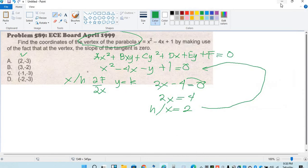Negative 3. Yan na yung value ng k. Ang coordinate ng vertex ng parabola ay h and k. Ano yung h? 2. And k ay negative 3. Ang answer ay letter A.